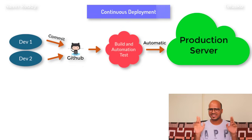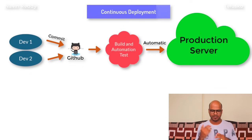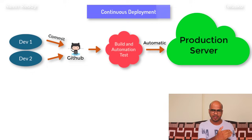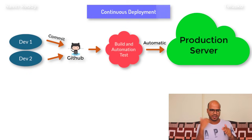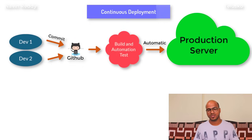Continuous deployment is a bit scary — the moment you commit your code, after the automation test, your code is directly deployed to the production server. If something is wrong, you're in trouble. But it doesn't happen very often: you write code, commit it, it gets tested, and then it goes to the production server. Not every company does this — some only do CI, some do continuous delivery, some do continuous deployment. Companies working with microservices often believe in continuous deployment, and big companies like Facebook do this: write code, commit, and it gets deployed.